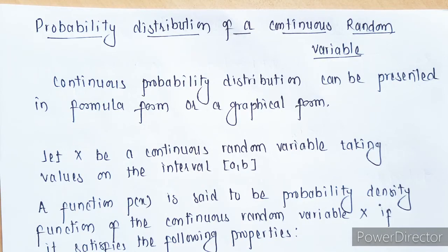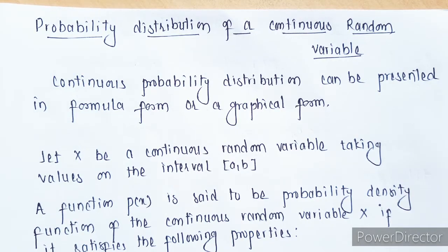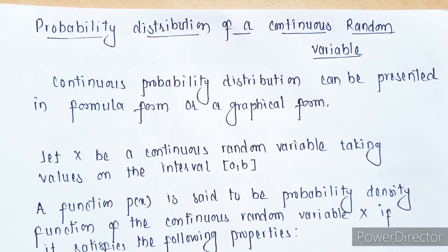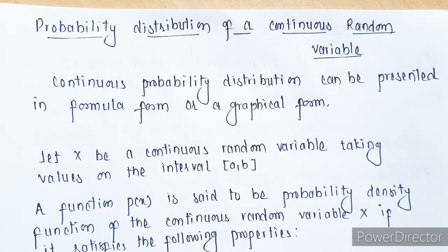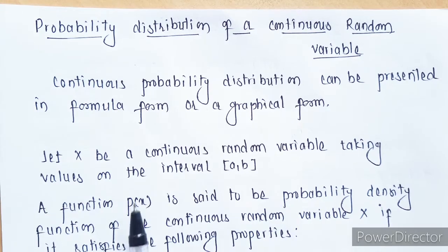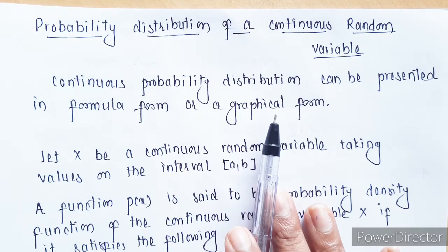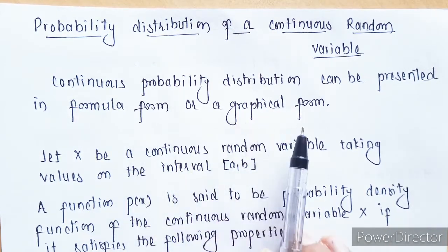Probability distribution of a continuous random variable. In case of a continuous random variable, the probability distribution can be represented either in formula form or graphical form. In the previous case, for a discrete random variable, we had presented the probability distribution in tabular form — for each value of x we had some probability P(x). But in case of continuous probability distribution, we can represent it either in formula form or graphical form.